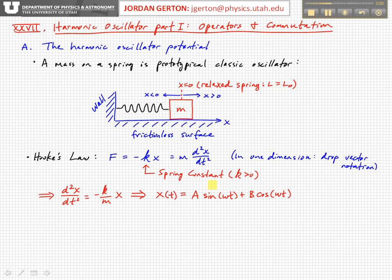This is equal to MA by Newton's Second Law, and we express A as d squared x dt squared. We're only talking about one dimension here, so we're dropping the vector notation, so we just have f and x and no vectors.